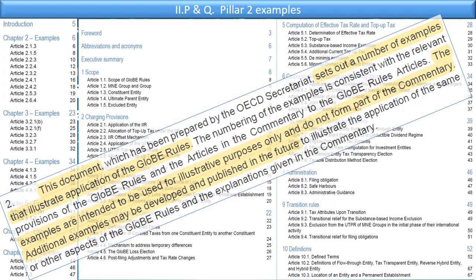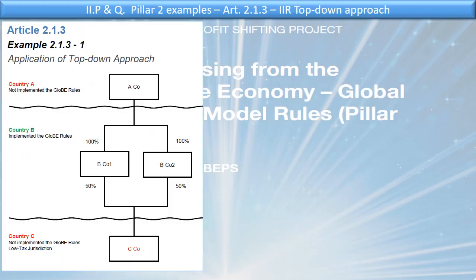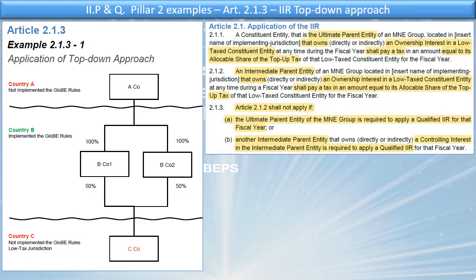Let's have a look at the examples themselves at a high level. The OECD starts us off nice and easy with Article 2.1.3, showing a diagram: ACO is not in a GloBE country, so there are no IIR rules. BCO does have IIR rules. BCO1 and BCO2 are each owned 100% by ACO, and they both own 50% in CCO, which does not have GloBE rules and is a low-tax jurisdiction. Under Article 2.1, the ultimate parent entity that owns an ownership interest in a low-tax constituent entity shall pay a tax equal to its allocable share of the top-up tax.